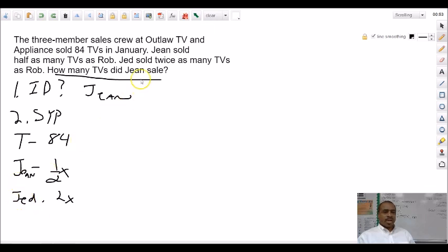Make sense? So, it says Jean sold half as many. So, that's one half X. Jed sold twice as many. That's 2X. And then Rob, we don't know how many he sold, so we'll just call it X. So, Tara, how do you think we would set all that up into an equation?